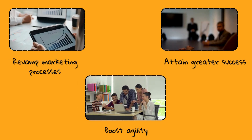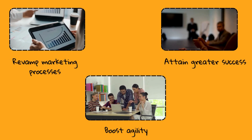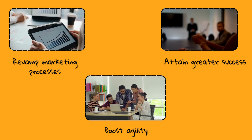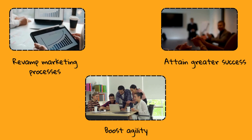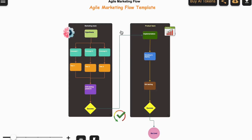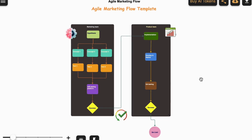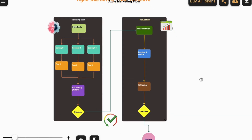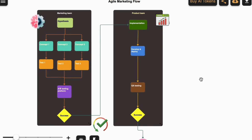Transform your marketing processes, increase agility, and achieve greater success with the UnPlex.me Agile Marketing Flow Template — your pathway to more efficient and adaptable marketing teams.